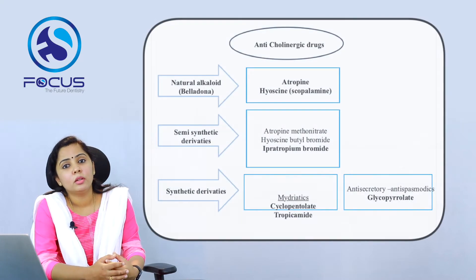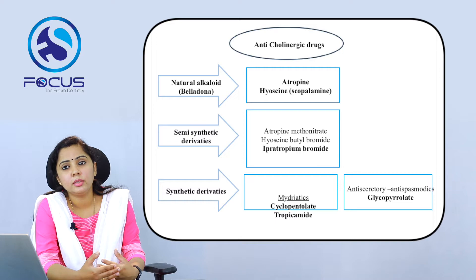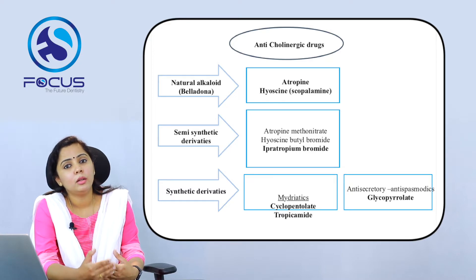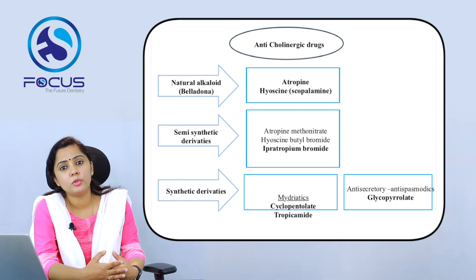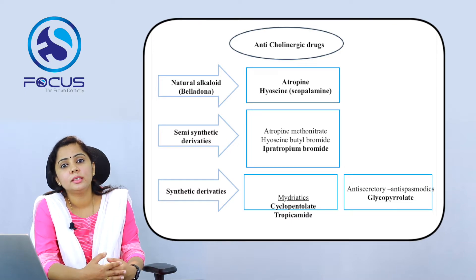Anticholinergic drugs are drugs which oppose the action of cholinergic agents. There are three groups. First, the natural drugs or belladonna alkaloids — prototype drugs are atropine and hyoscine. Atropine is obtained from the plant Atropa belladonna, hence called belladonna alkaloid. Second, the semi-synthetic agents — the prototype drug is ipratropium bromide. Third, the synthetic derivatives, which include mydriatics such as cyclopentolate and tropicamide, and the antisecretory agent glycopyrrolate.